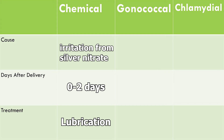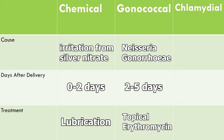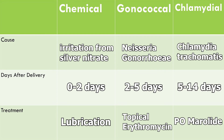The next type is gonorrheal conjunctivitis, caused by Neisseria gonorrhoeae. You'll generally see it two to five days after delivery, and you treat it with topical erythromycin. The third type is chlamydial conjunctivitis, caused by Chlamydia trachomatis. You usually see it five to fourteen days after delivery, and you treat it with an oral macrolide.